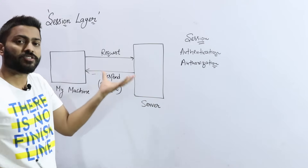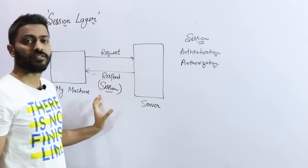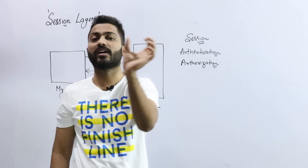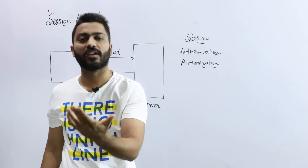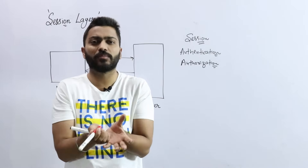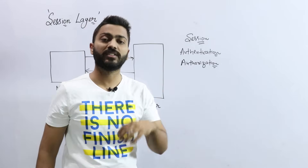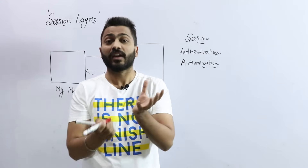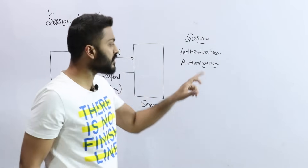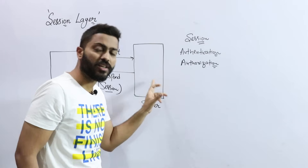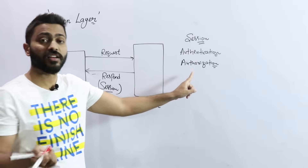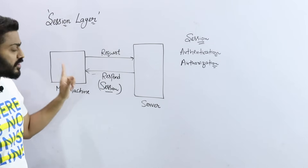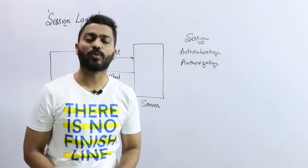After the login page, a session is created and the homepage opens. Authorization gives you privileges — for example, doing online payment or transfer. If you go to any website or online server, it doesn't mean you can access all things. Only after authentication, when you validate your identity, you will have a session, and that session allows you to do whatever work you want.